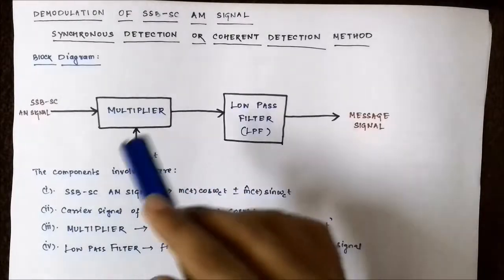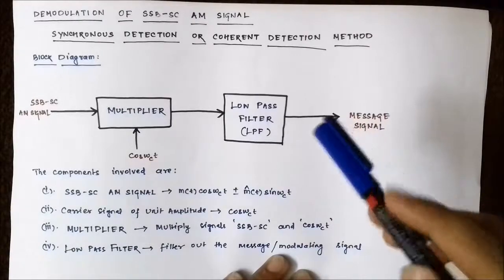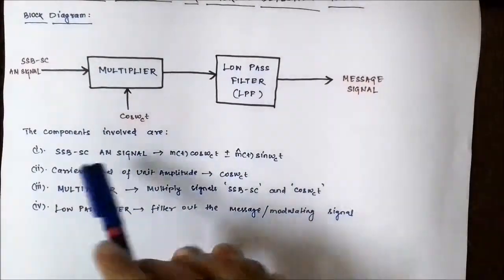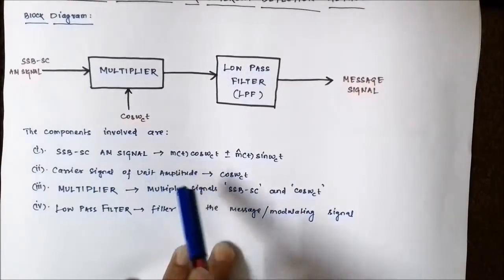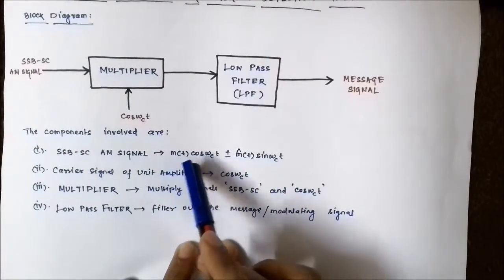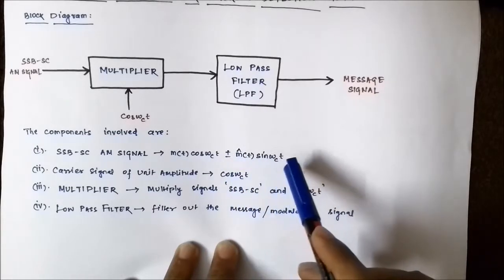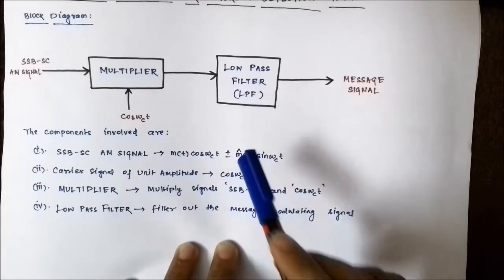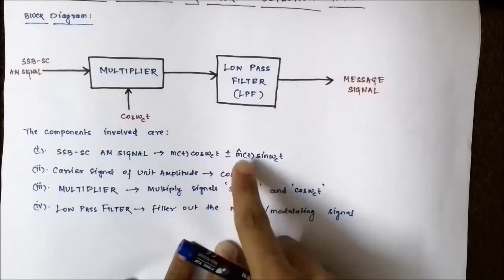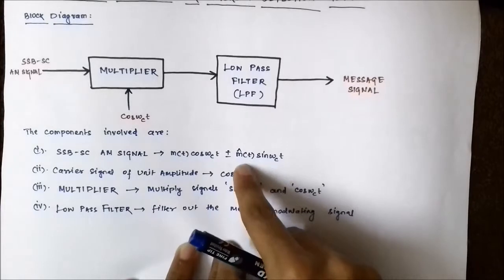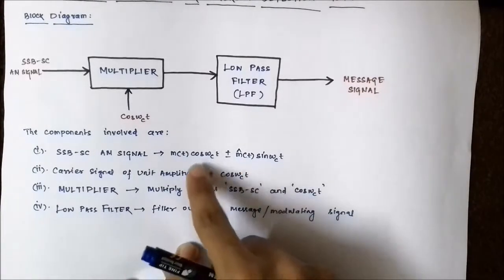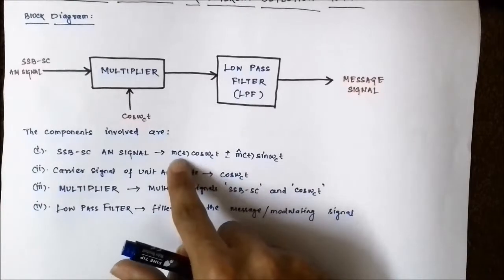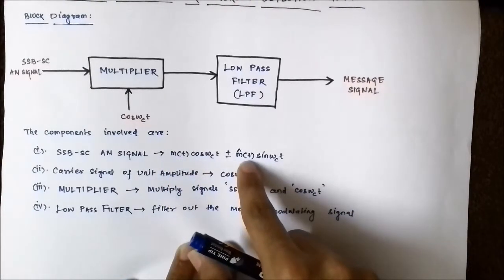Please draw this diagram or take a screenshot so you can follow the remaining steps more easily. As a quick recap, the SSB-SC amplitude modulated signal is given by: m(t)·cos(ωc·t) ± m̂(t)·sin(ωc·t), where m(t) = Em·cos(ωm·t) and m̂(t) = Em·sin(ωm·t). Here m̂(t) is the message signal phase-shifted by 90° (π/2 radians), giving cos(ωc·t), sin(ωc·t), Em·cos(ωm·t) as m(t), and Em·sin(ωm·t) as m̂(t).